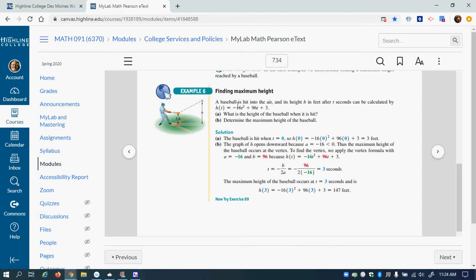It says a baseball is hit into the air, and its height is h in feet. After t seconds, it can be calculated by this equation. They want to know the height of the baseball when it is hit, and then determine the maximum height of the baseball. So let's do that on our scratchpad.